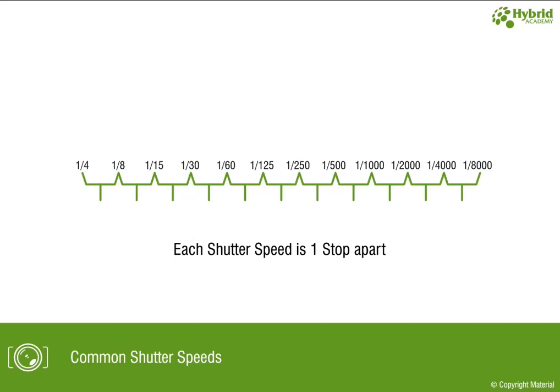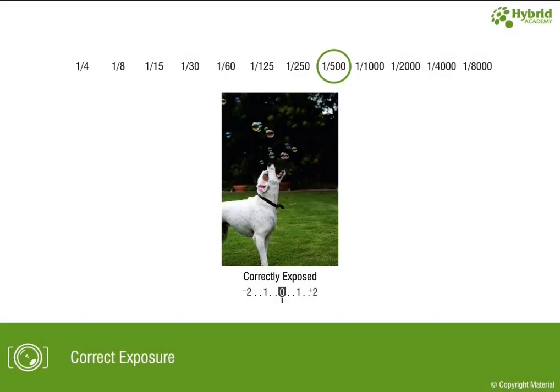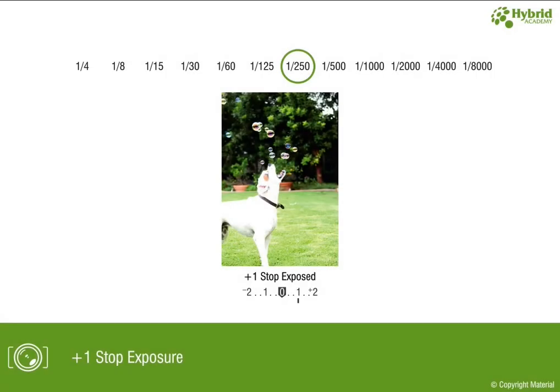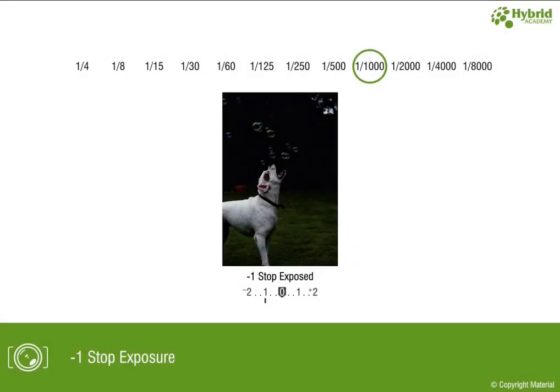Both shutter speed and f-stop are inversely proportional to each other. For example, a picture correctly exposed at 1/500 shutter speed — if we reduce the shutter speed to capture some motion, the output photo will be overexposed by plus one stop. Similarly, if we increase the shutter speed to freeze motion, the output photo will be underexposed by minus one stop.